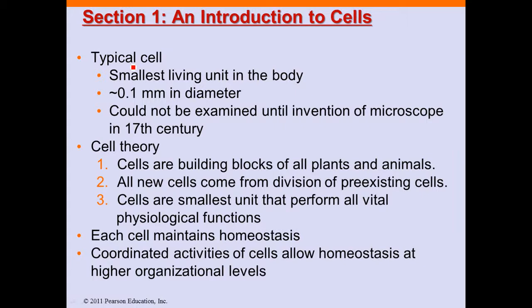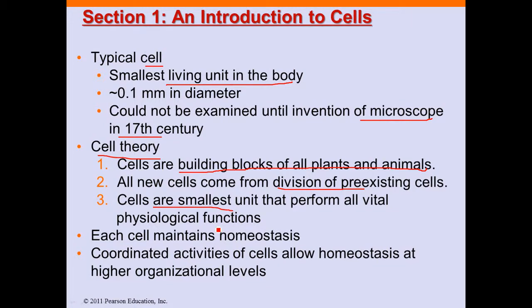The typical cell is the smallest living unit in the body. No humans ever saw cells until the microscope was invented in the 17th century, the 1600s. Cell theory suggests that cells are the building blocks of all plants and animals — every living thing you see is made up of cells. All cells come from pre-existing cells that divide, and cells are the smallest units that carry out cellular functions. Cells maintain homeostasis and combine together to allow homeostasis at a higher level.